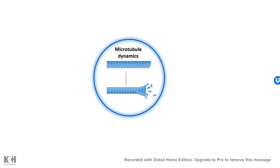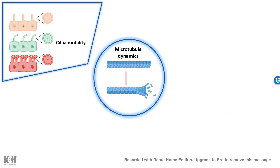Microtubule dynamics is so important for a cell's normal physiology. It is important for motility of cilia. Imagine our lung epithelium, which is ciliated epithelium, which needs to beat its cilia for mobility of multiple substances. So the cilia mobility is completely dependent upon microtubule dynamics.